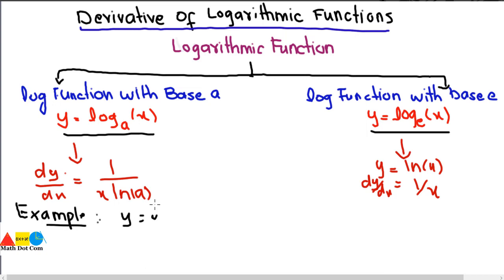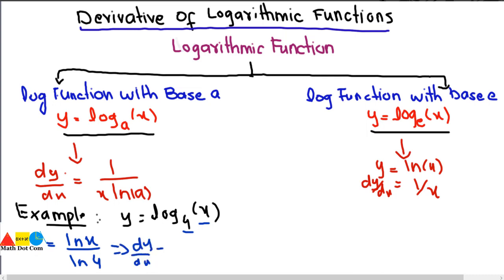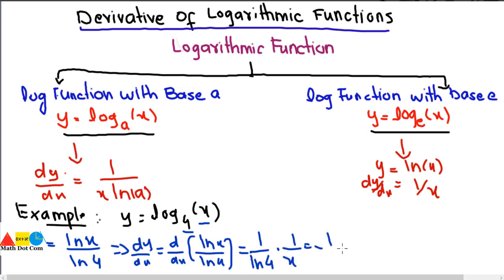If asked to find the derivative of Y equals log base 4 of X, one method is to rewrite it as Y equals natural log of X divided by natural log of 4. Then dy/dx equals d/dx of natural log of X divided by natural log of 4. Since natural log of 4 is a constant, we take it out, and the derivative of natural log of X is 1 over X. So the derivative is 1 over X times natural log of 4.